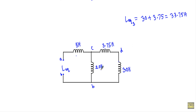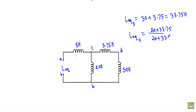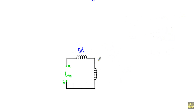That 33.75 henry is in parallel with the 20 henry inductor. Therefore L equivalent 4 equals 20 × 33.75 divided by 20 + 33.75. I can reduce these three inductors to a single inductor of L equivalent 4, which equals 12.56 henry.